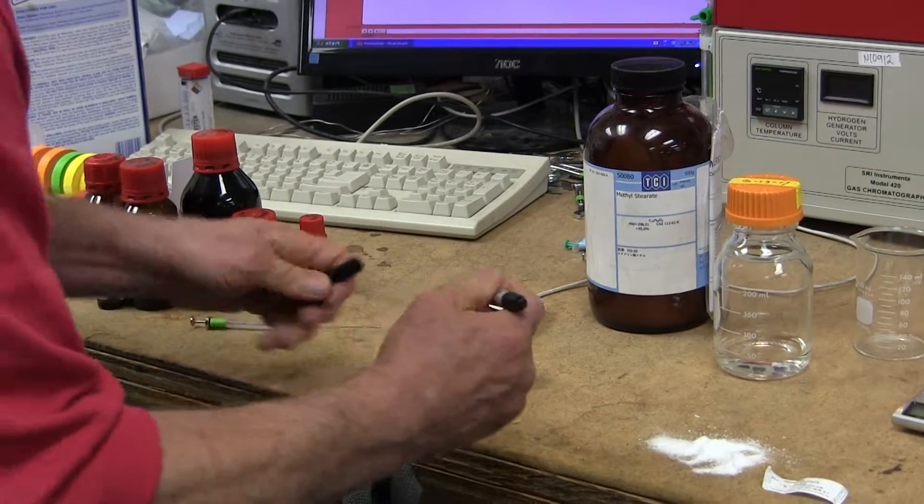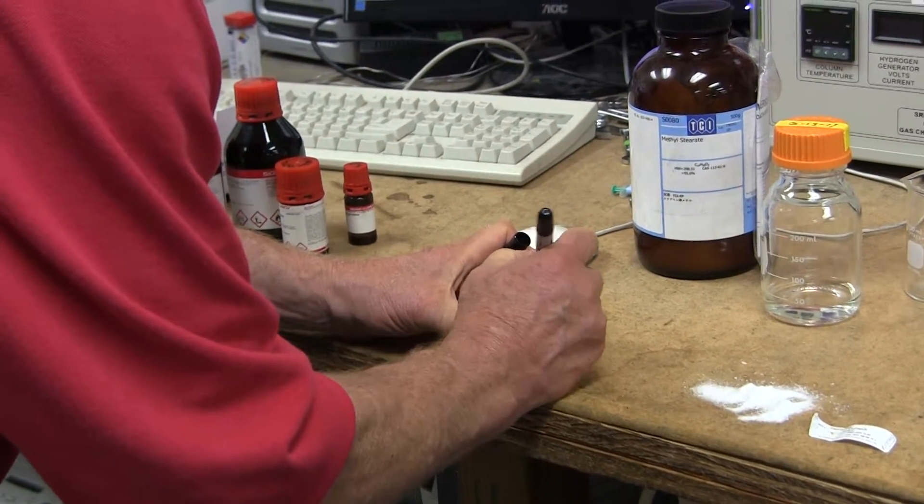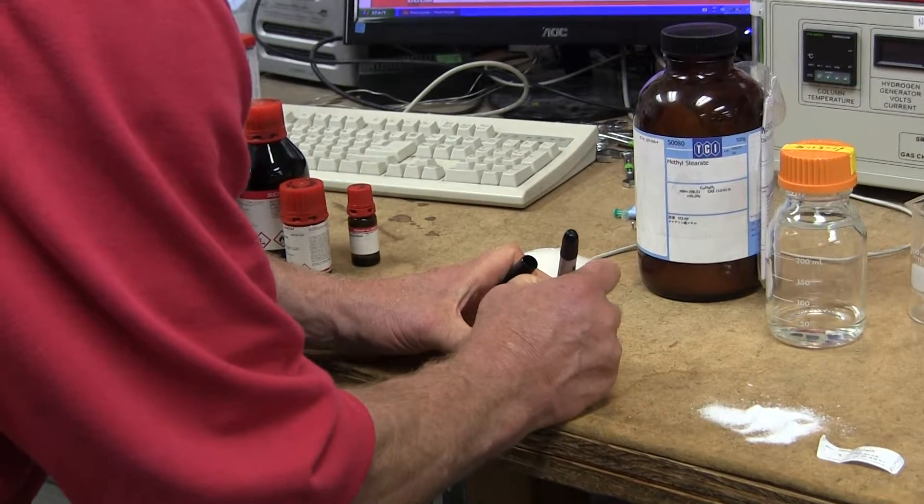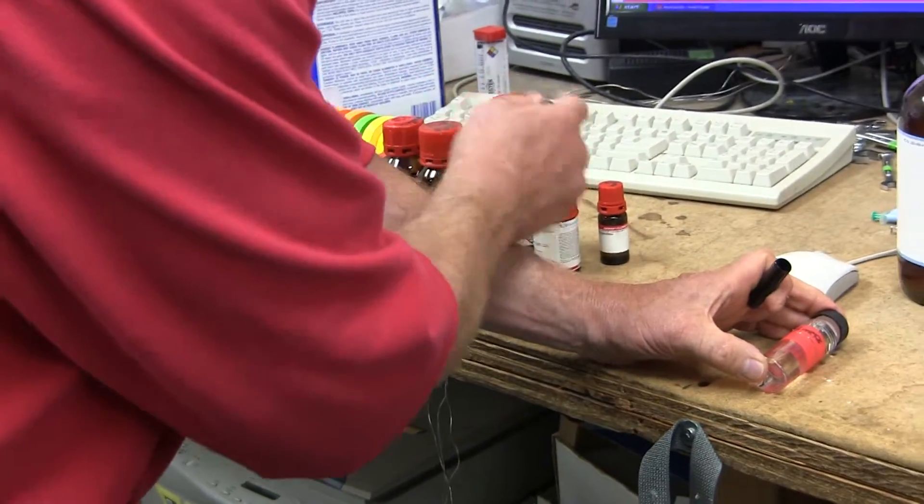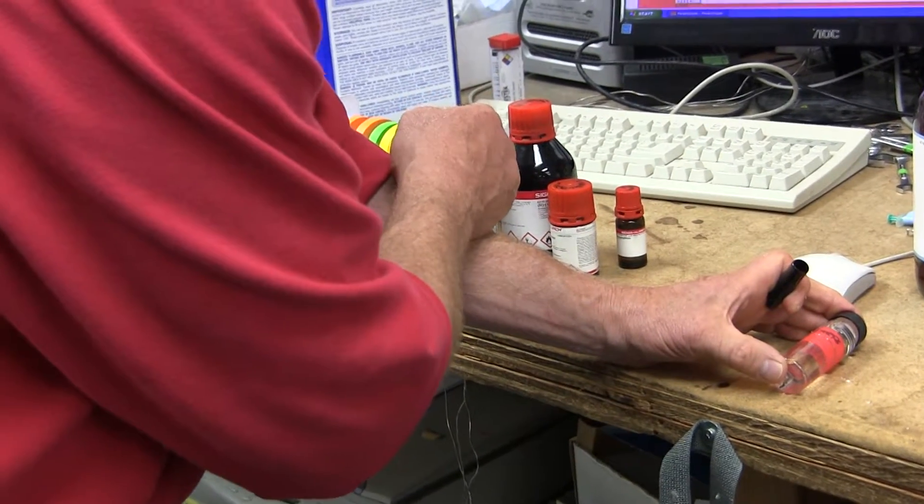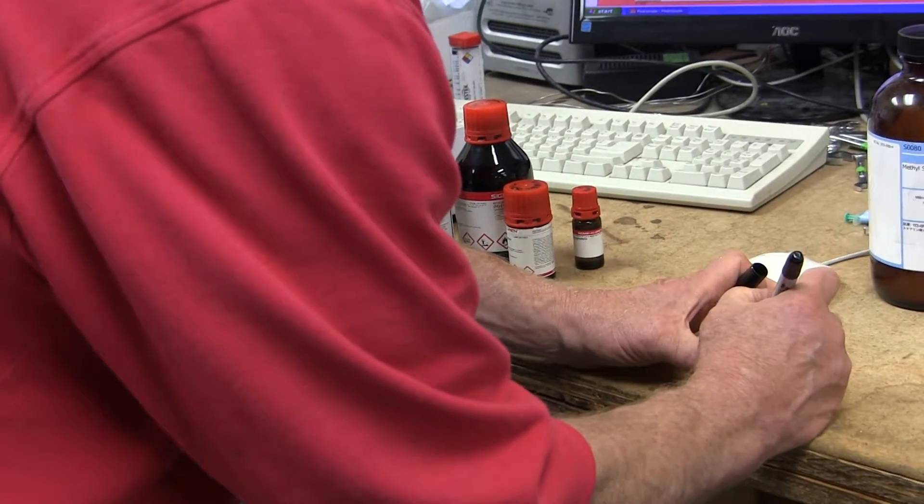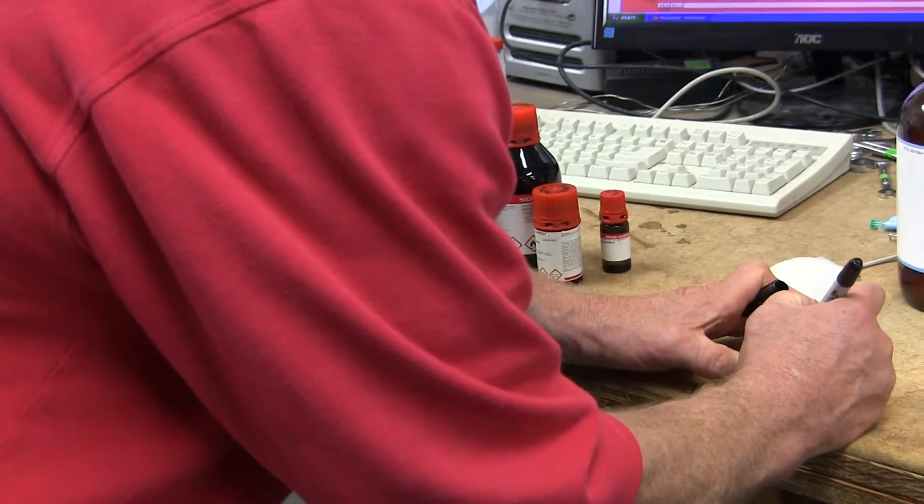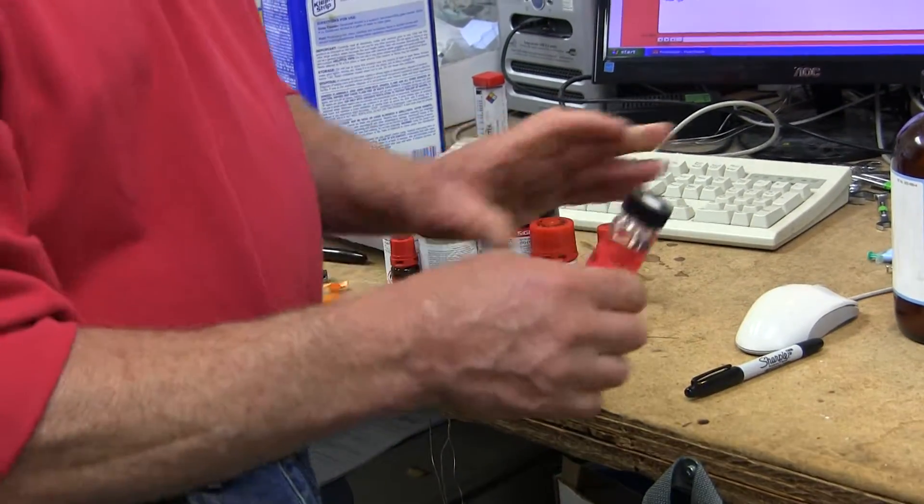I'm just going to label this as six terpenes for right now, but you would probably want to label it with the actual six terpene names: the alpha pinene, beta pinene, myrcene, limonene, linalool, and beta-caryophyllene. And then, of course, the date, because everything needs to be dated so you know that it correlates to a certain batch of internal standard solution.